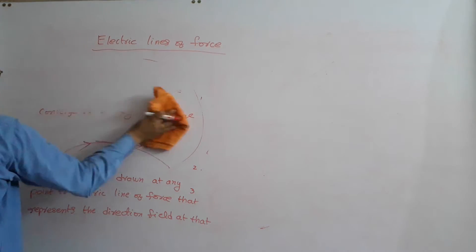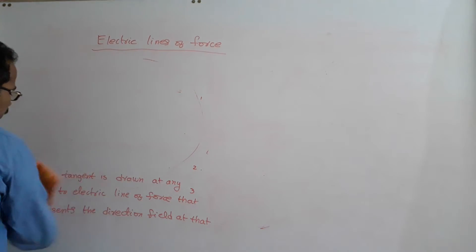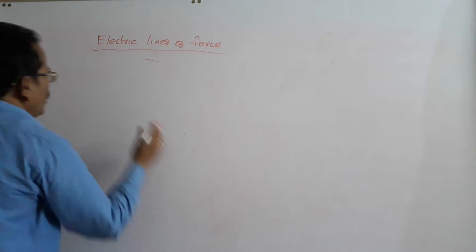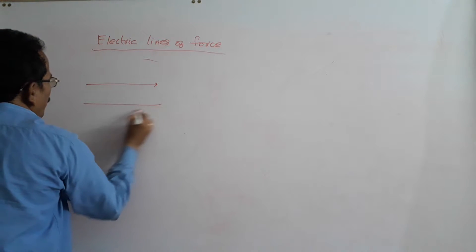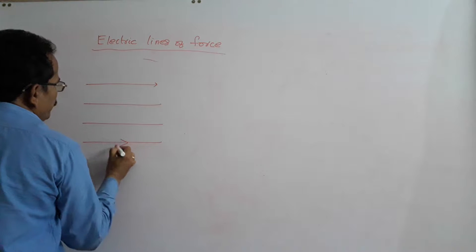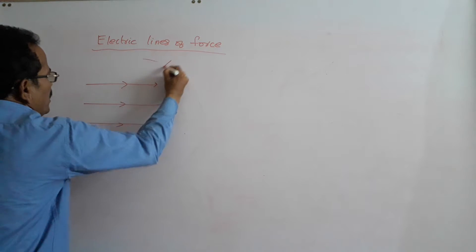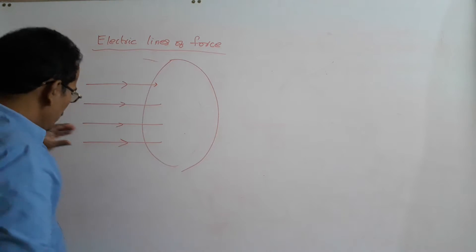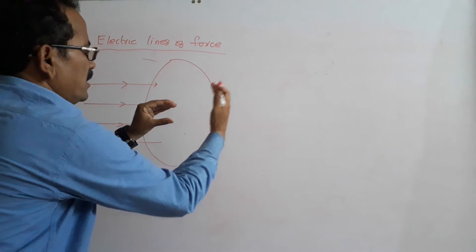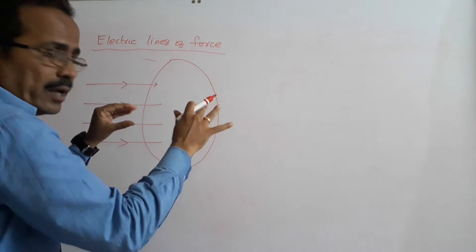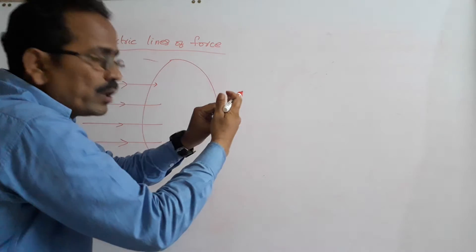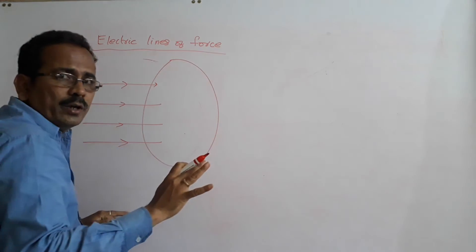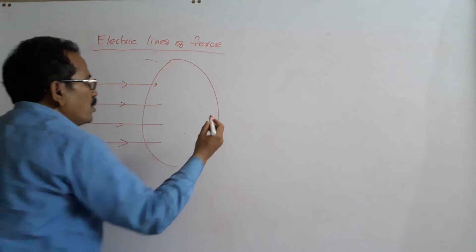Point number 6: The number of electric lines of force passing through an area normal to it — imagine an area normal to the lines of force and those lines pass through that area. The number of electric lines of force passing through an area normal to it is called electric flux.